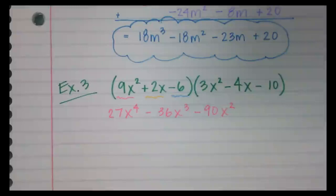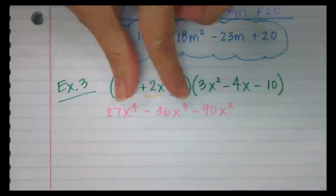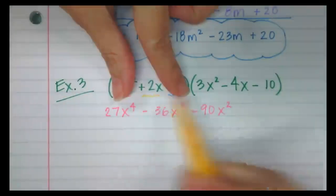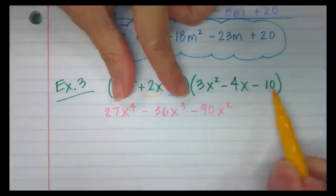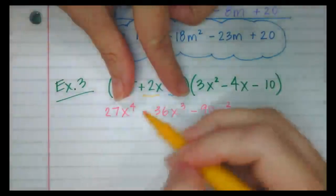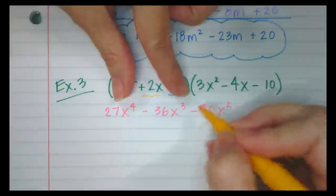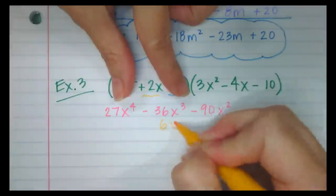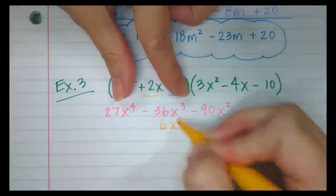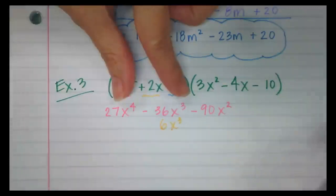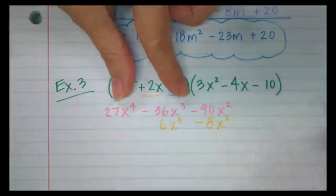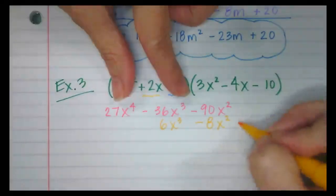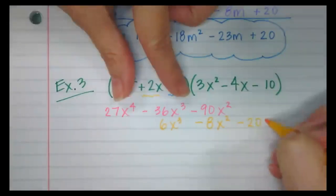Now I need to distribute the 2x. When I distribute 2x to this trinomial, I need to multiply each term by 2x. That's going to be 6x cubed — I'll stack that one right here because those are like terms. Next up should be negative 8x squared, and then minus 20x.